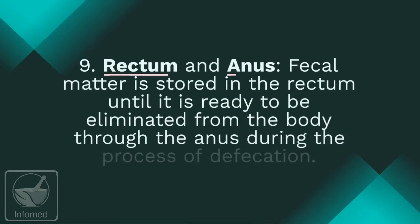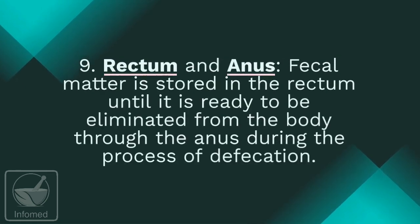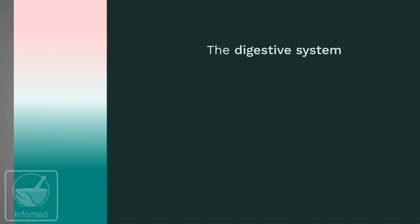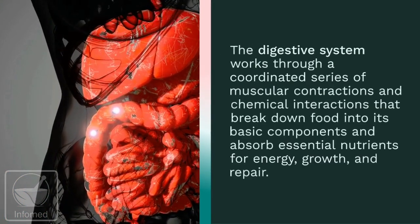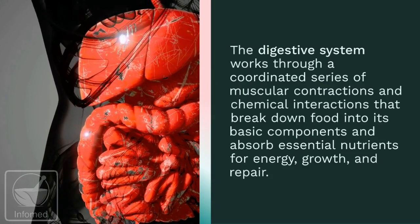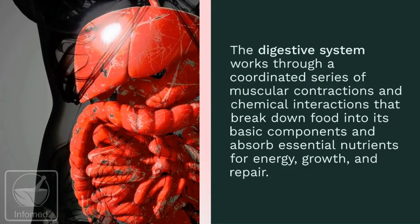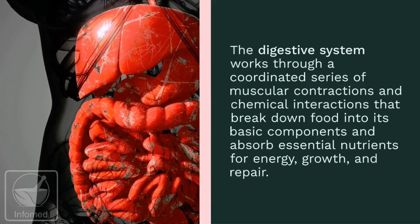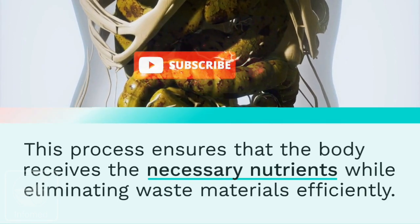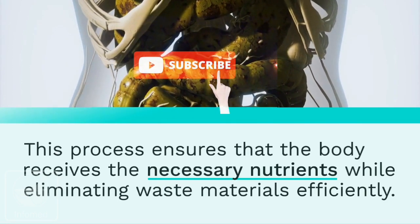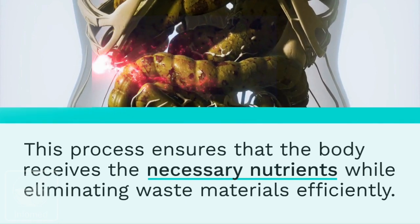The rectum and anus: fecal matter is stored in the rectum until it is ready to be eliminated from the body through the anus during the process of defecation. The digestive system works through a coordinated series of muscular contractions and chemical interactions that break down food into its basic components and absorb essential nutrients for energy, growth, and repair. This process ensures that the body receives the necessary nutrients while eliminating waste material efficiently.